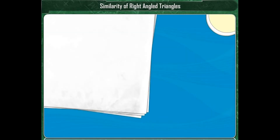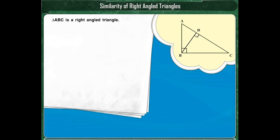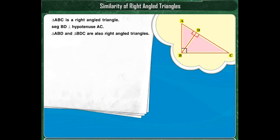Let's begin with the figure of a right-angled triangle ABC. In triangle ABC, segment BD is perpendicular to hypotenuse AC. Segment BD divides the right-angled triangle ABC into two more right-angled triangles: triangle ABD and triangle BDC.